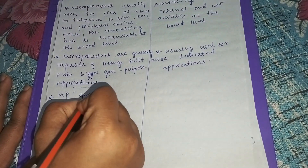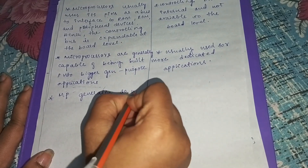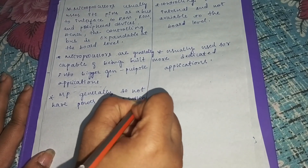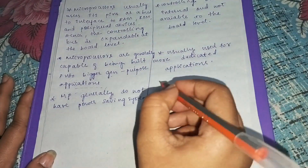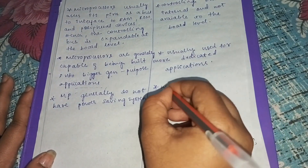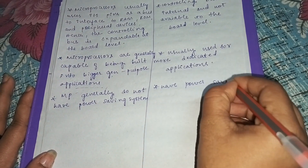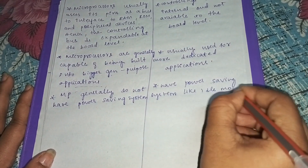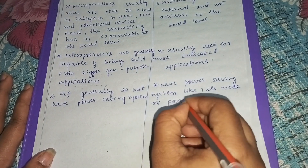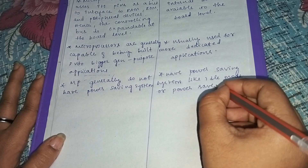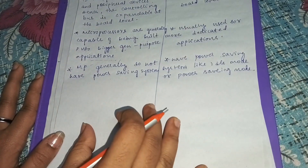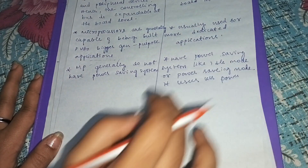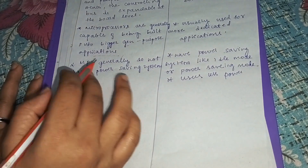The fourth point: microprocessors generally do not have a power-saving system. Microcontrollers have a power-saving system, such as an idle mode or power-saving mode, so overall they use less power.